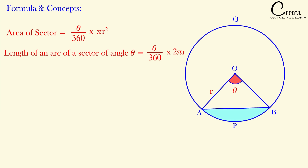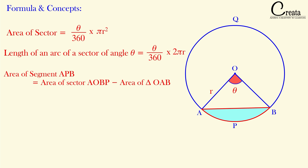Further, this is the segment. Segment is the region between the chord and the arc. Here AB is the chord, so the region between the chord and the arc is the segment. We do not have a special formula to find the area of the segment, but we can calculate it using the sector and the triangle. Area of the segment = area of the sector minus area of the triangle.